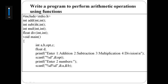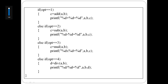Since all these functions are used in the program, they are declared at the beginning. All functions take two integer numbers as arguments. In the main function, read a and b. For option one — addition — call the add function and pass a and b.